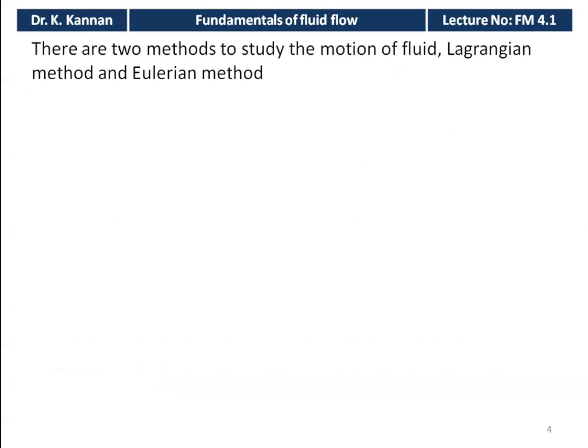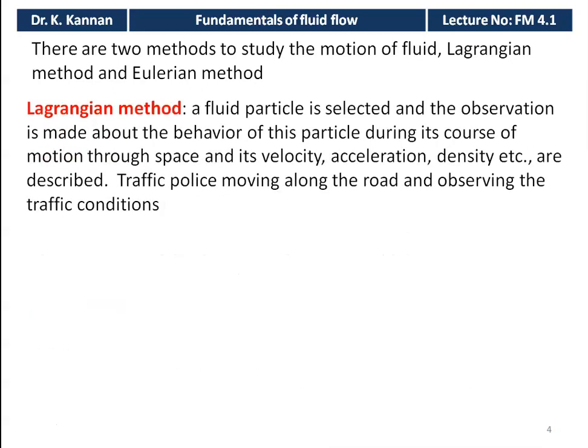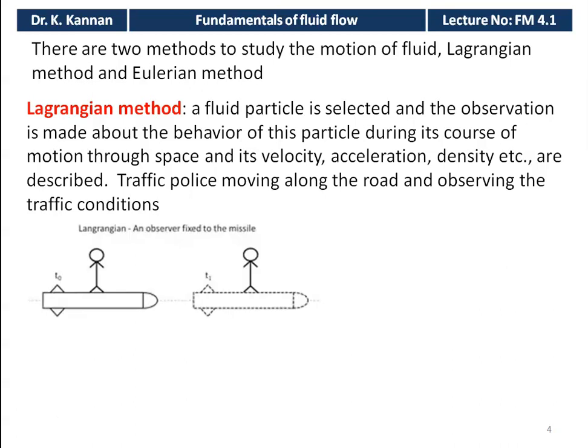There are two methods to study the motion of fluid: the Lagrangian method and the Eulerian method. In the Lagrangian method, a fluid particle is selected and observation is made about the behavior of this particle during its course of motion through space — its velocity, acceleration, density, etc. are described. The observer moves along with the fluid particle, recording its behavior. An analogy is a traffic observer moving along the road.